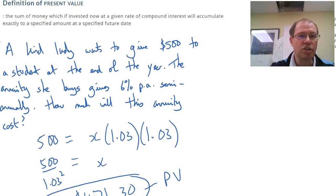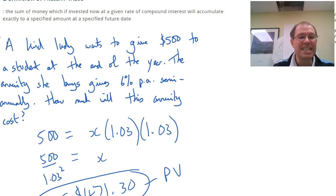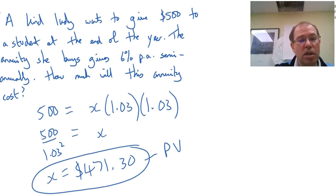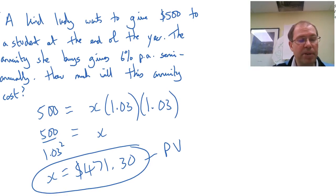That's what the present value of an annuity is. The present value is the sum of money which if invested now, so if I invest $471.30 now at a given rate of compound interest or 3% every 6 months, will accumulate exactly to a specified amount. So my $471.30 present value now compounded at a specific rate will give me $500 after 2 compounding periods. That's in a nutshell what present value is. Now let's extend that to a full example.